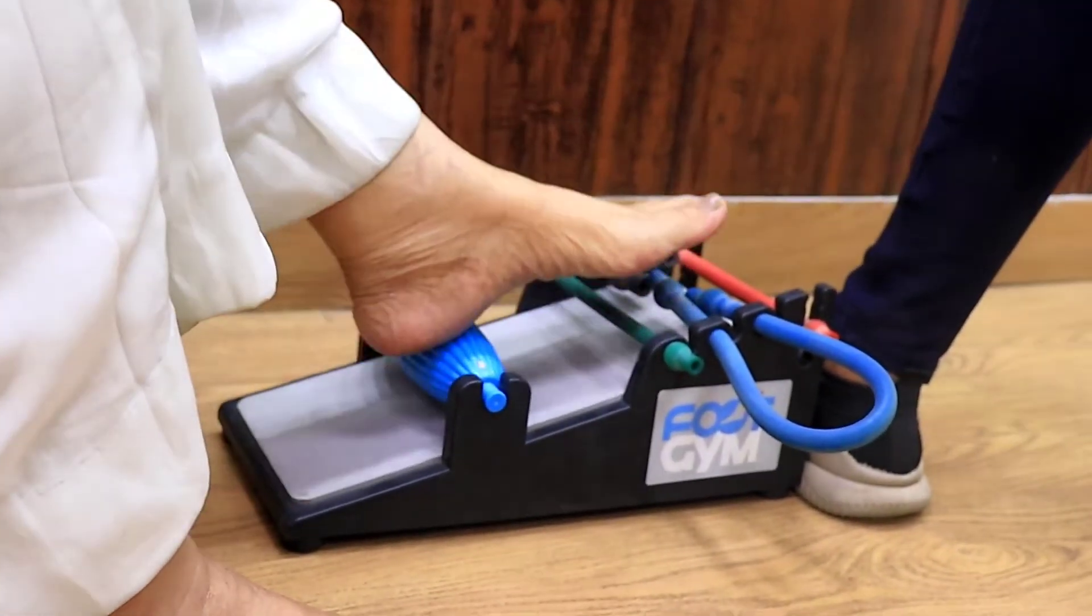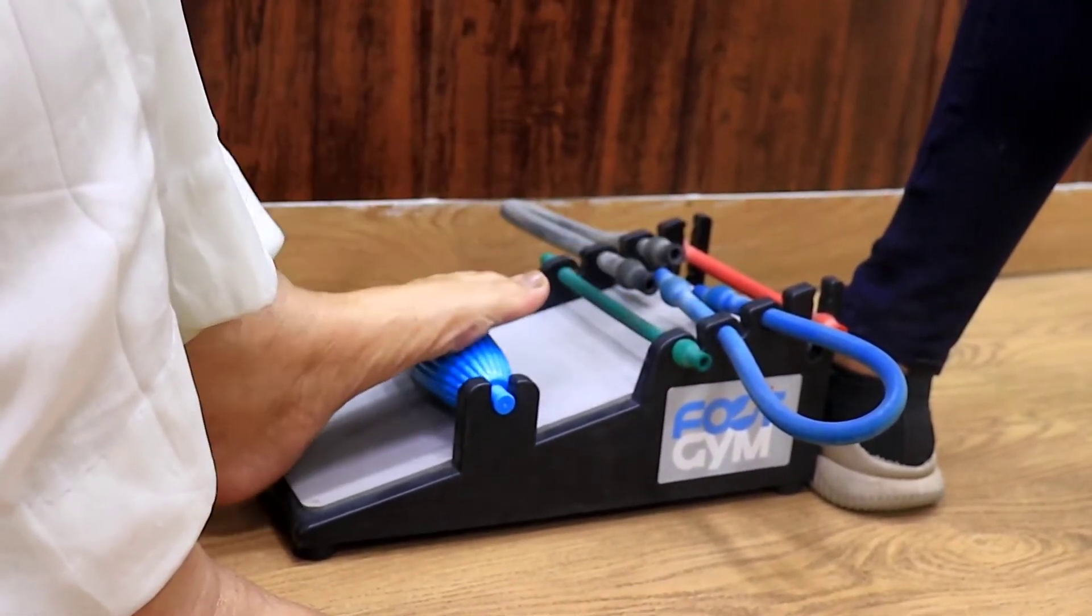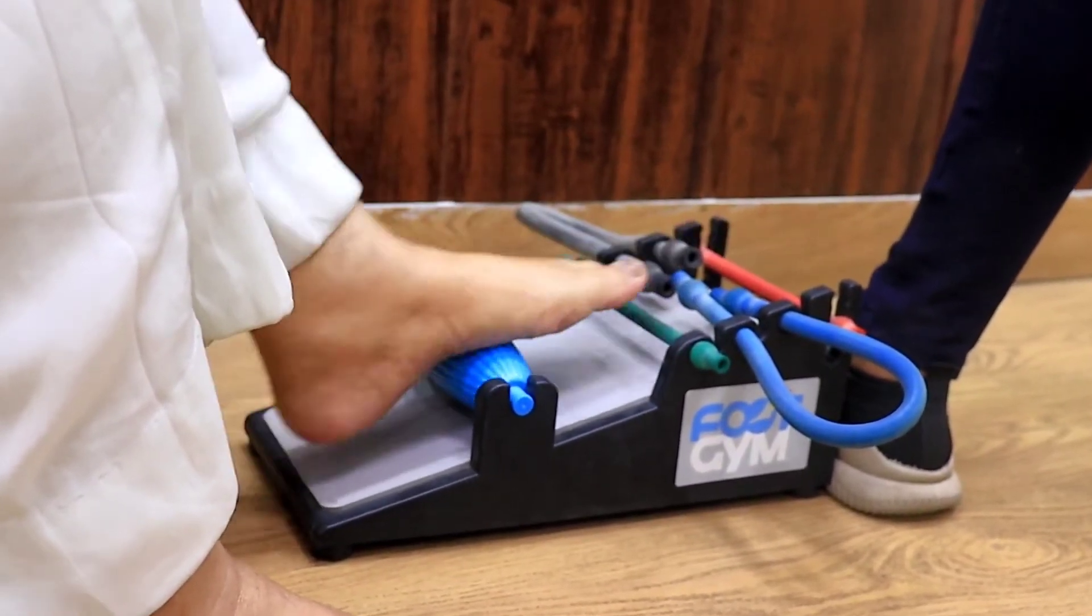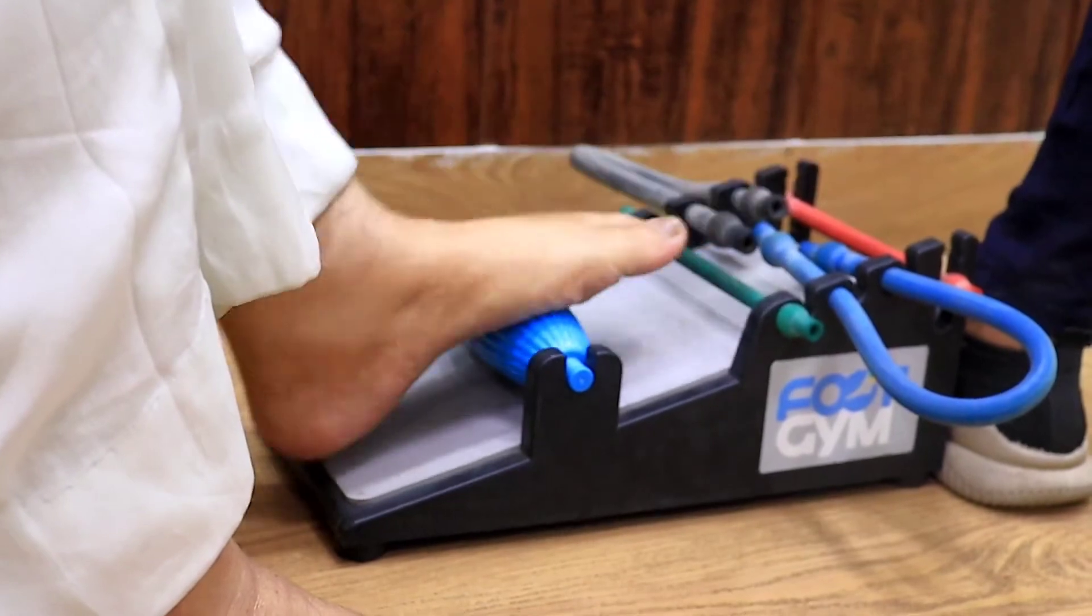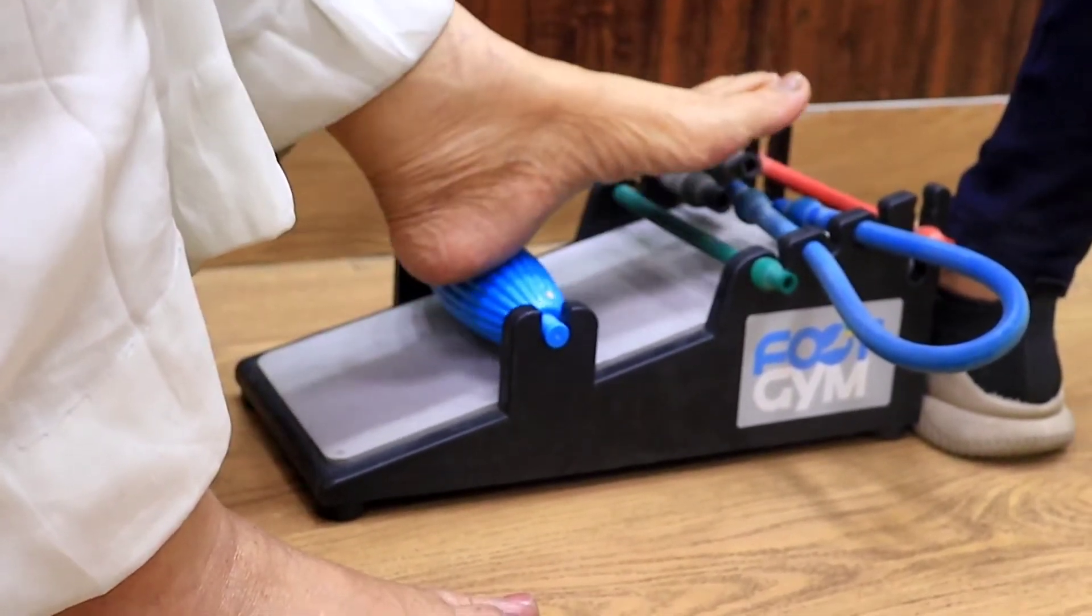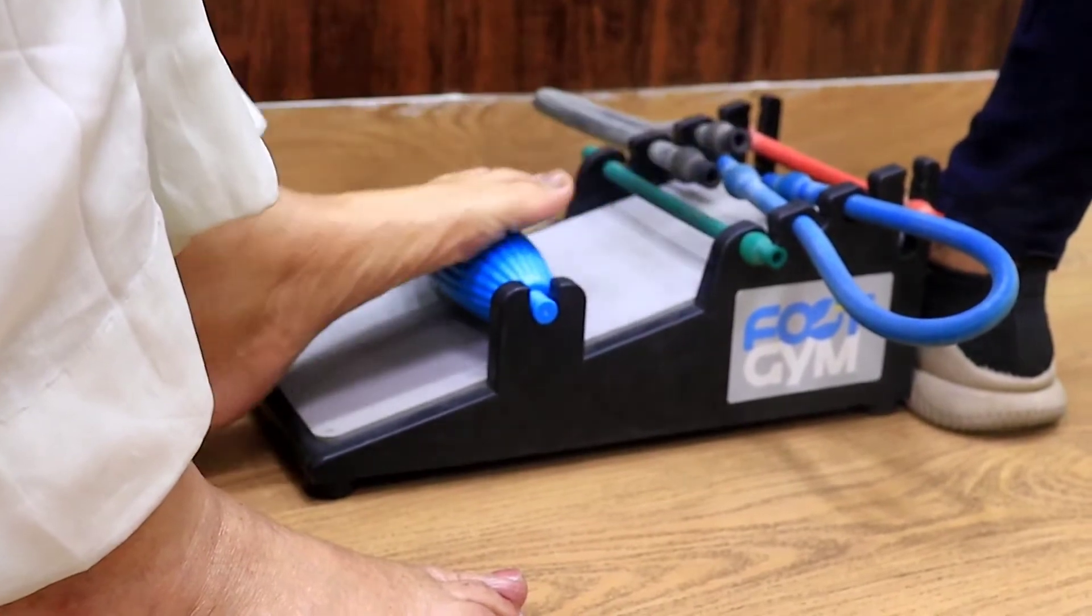Plantar fascia release with a roller. Our feet bear the weight of the whole body and they tend to go mal-aligned. Things tend to go tight there, so unless we have balanced feet, we cannot have balanced bodies.